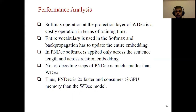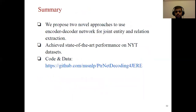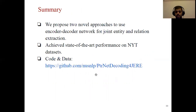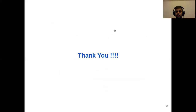In summary, we propose two novel approaches to use the encoder-decoder network for joint extraction of entities and relations. Our models achieve state-of-the-art performance on the NYT dataset. Our code and data are available on GitHub. If you have any questions, you can post them there. Thanks for listening.